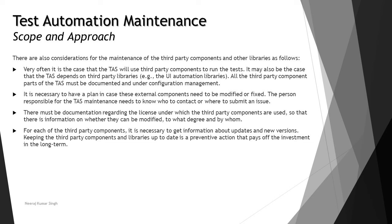It is also necessary to have a plan in case external components need to be modified or fixed. The person responsible for maintenance needs to know who to contact and where to submit an issue. There must be documentation regarding the licenses under which third-party components are used, including information on whether they can be modified, to what degree, and by whom. For each third-party component, it is necessary to get information about release dates and new versions, as keeping third-party components and libraries up to date is a preventive action that pays off in the long run.